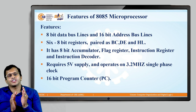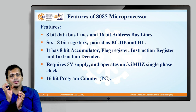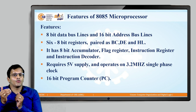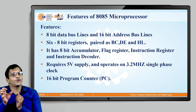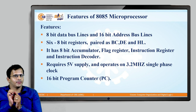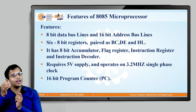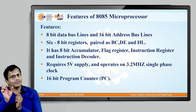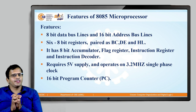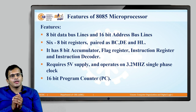Then we have the instruction register and instruction decoder. The instruction register stores the fetched instruction. In the instruction decoder, instructions that are not understood by the computer — for example, an instruction like ADI — are decoded and converted into opcodes in the form of bits. Then we have the program counter, which is 16-bit and stores the address of the next instruction. We will understand the program counter, instruction register, and decoder when we go through the instruction fetching process.